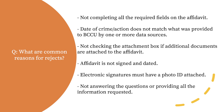What are the common reasons for rejects? Not completing all required fields on the affidavit; date of crime or action does not match what was provided to BCCU by one or more data sources; not checking the attachment box if additional documents are attached; affidavit is not signed and dated; electronic signatures must have a photo ID attached; not answering the questions or providing all the information requested.